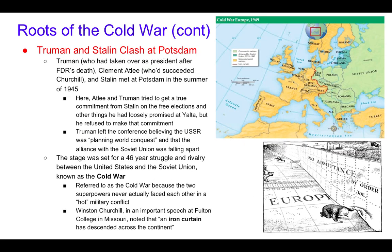There's a map on the right side of your slide, and the political cartoon underneath it illustrates one of your vocab words, which we'll get to in a moment. Truman, who had taken over as president after Roosevelt's death, and Clement Attlee met with Stalin at Potsdam in the summer of 1945. Attlee and Truman tried to get a true commitment from Stalin to hold free elections, but he just gave them the runaround. Truman left the conference believing the Soviet Union was planning world conquest, and the stage was set for a 46-year struggle between the United States and the Soviet Union that we call the Cold War.